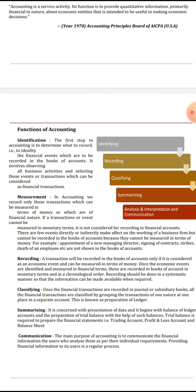Next is recording. A transaction will be recorded in the books of accounts only if it can be considered an economic event and measured in terms of money. Next is classifying — once financial transactions are recorded in the journal or any book, all transactions are classified by grouping transactions of the same nature into one separate account.